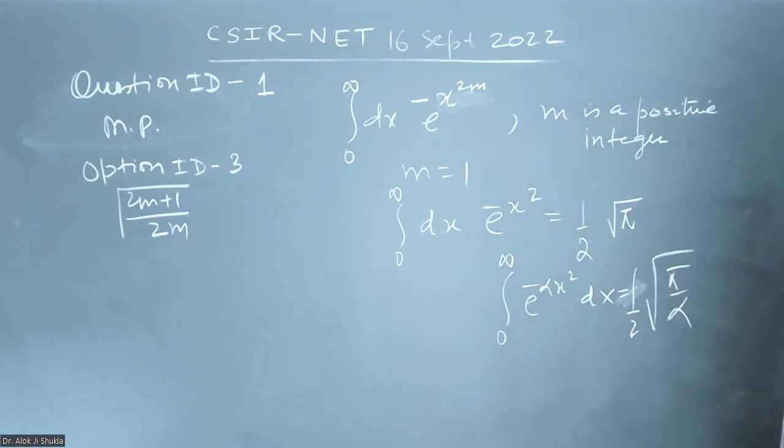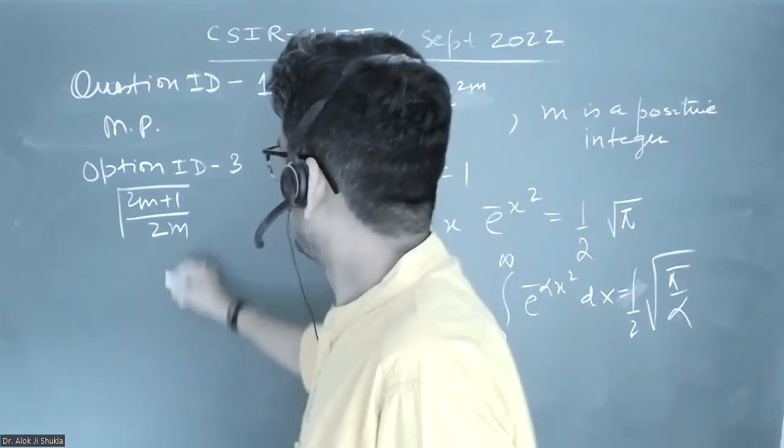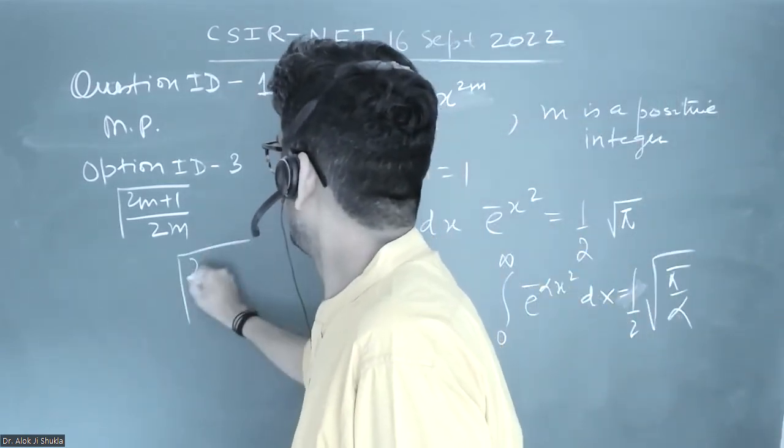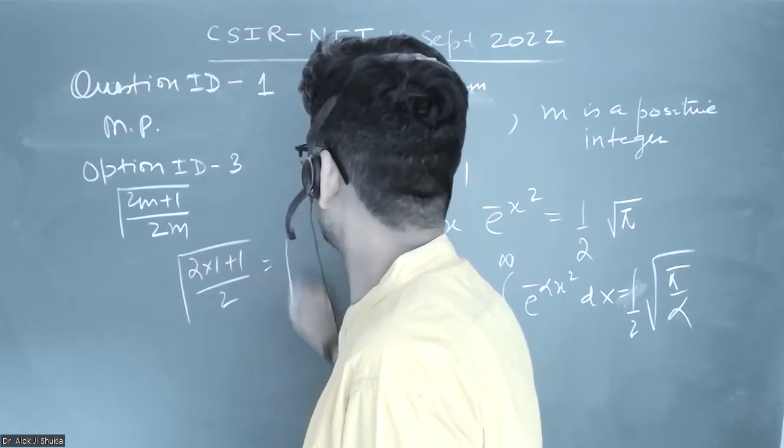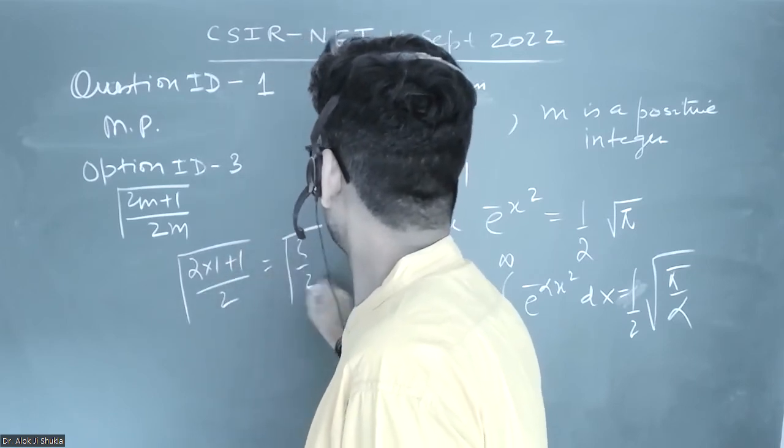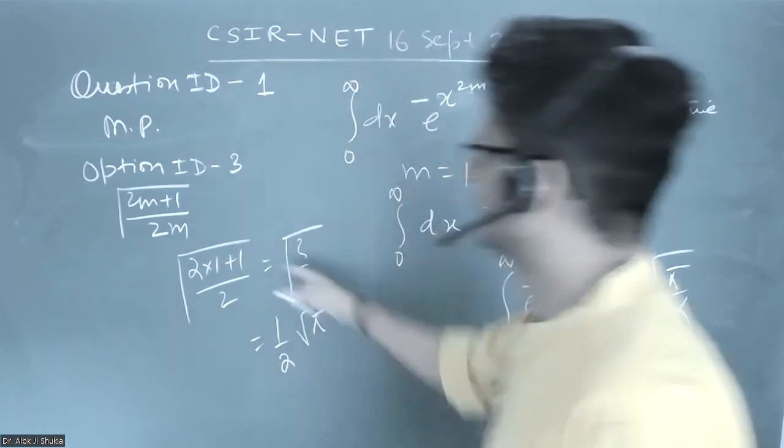By this logic, m equals 1. If I check the different options, this option when m equals 1 it becomes this, which is gamma 3 by 2, which is half under root pi. So this is satisfied by this result.